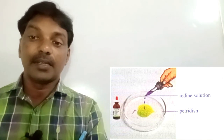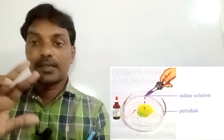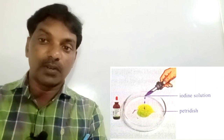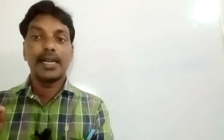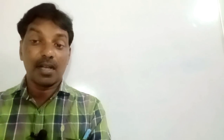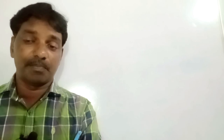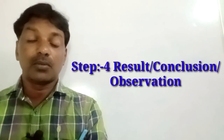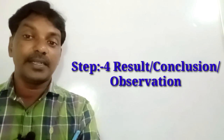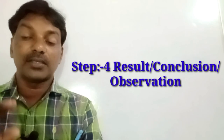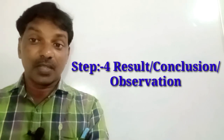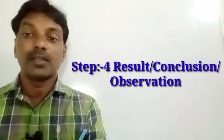Then apply iodine solution on both leaves. Where light was absent — under the light screen — there will be no color change. Where light fell on the leaf, the color changes to blue-black. This means that wherever all raw materials (water, chlorophyll, sunlight, and carbon dioxide) were available, starch formed, except where light was blocked.